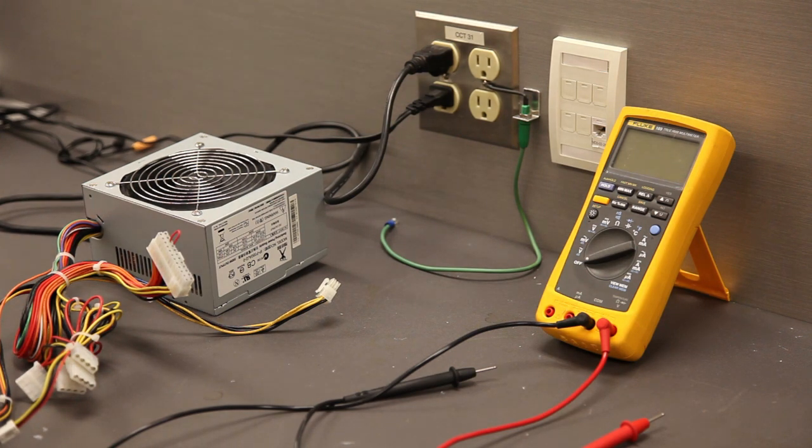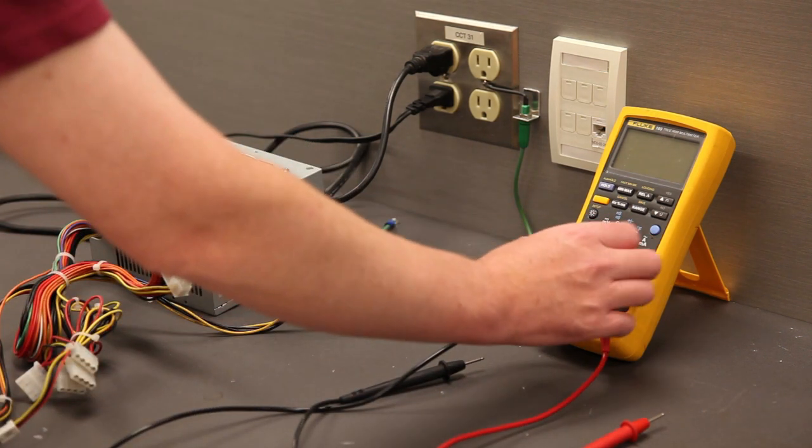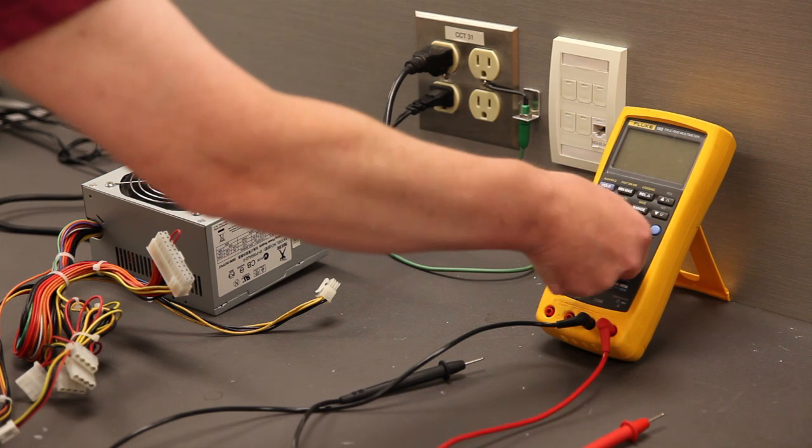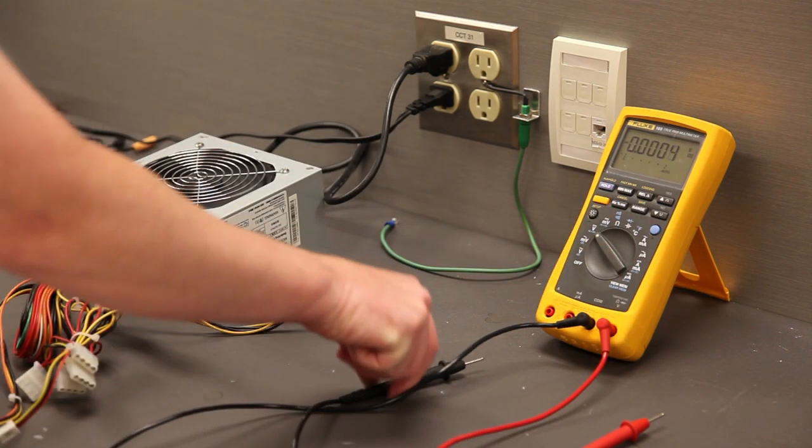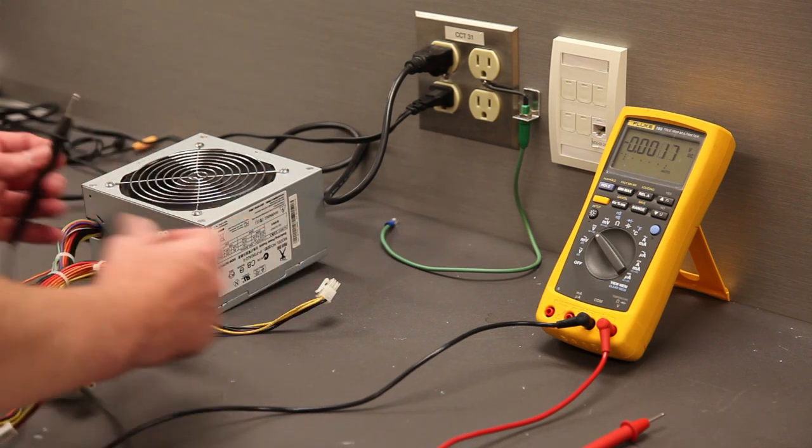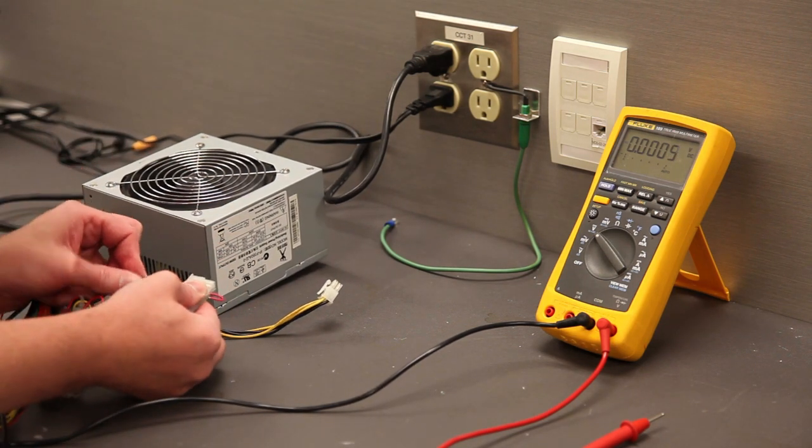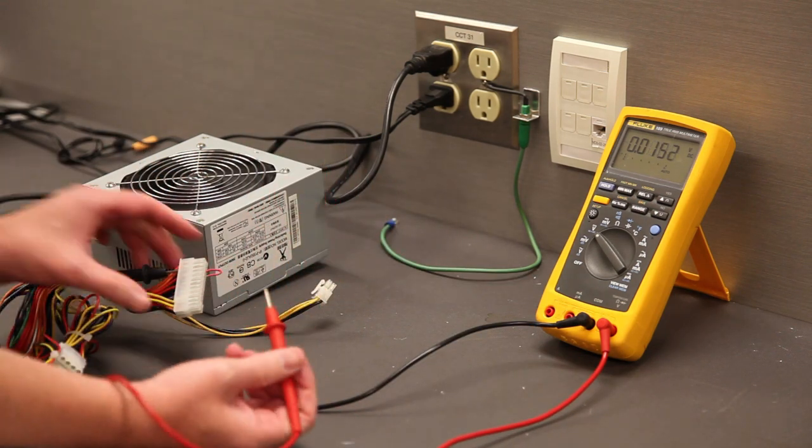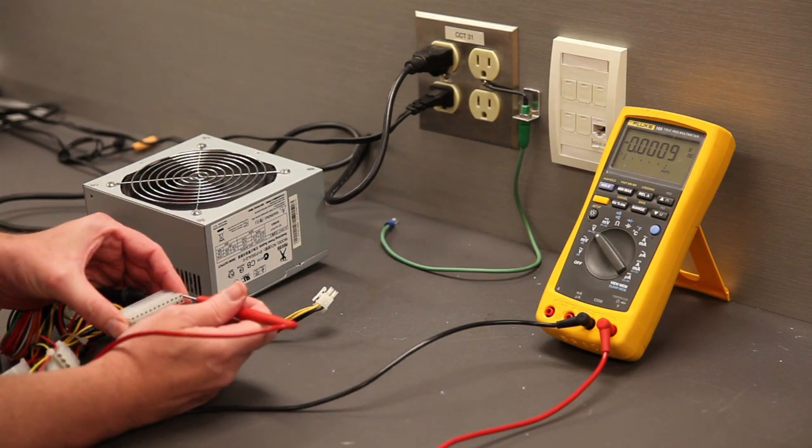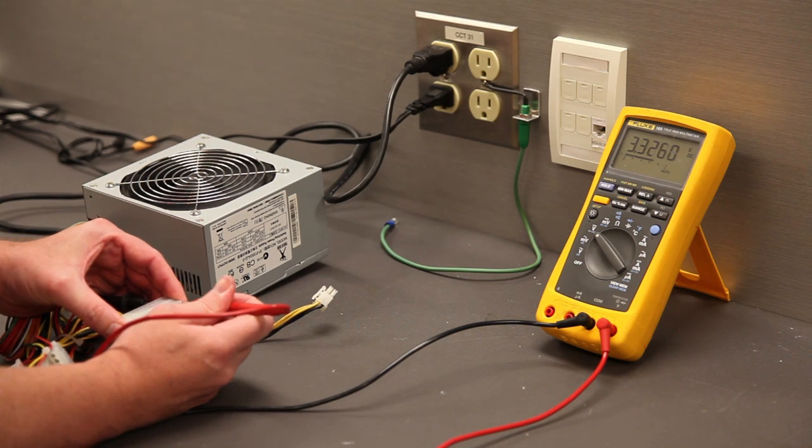Set the dial on the multimeter to volts DC. Insert the black lead from the multimeter into the wire side of pin 3 on the P1 connector. You can now use the red probe to probe all of the contact points on the P1 connector to take their voltage measurements.